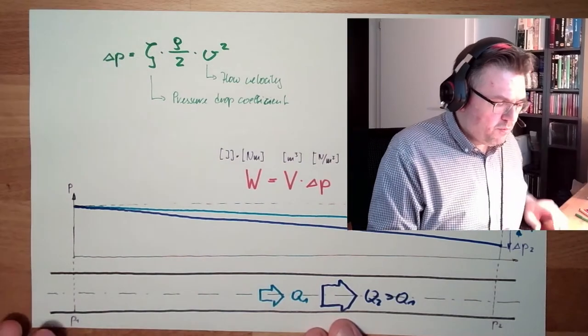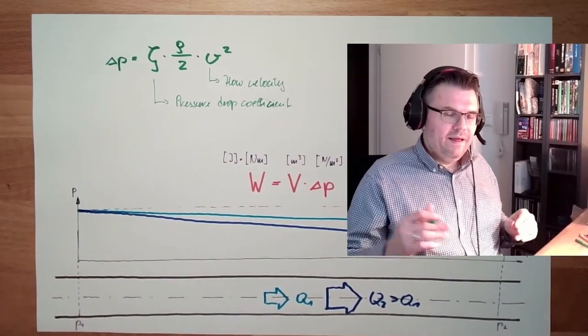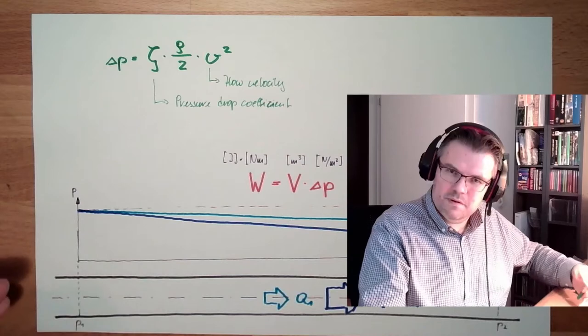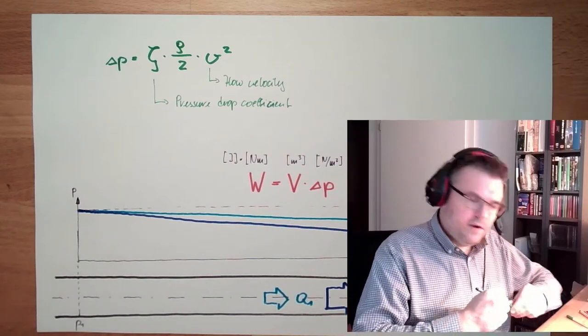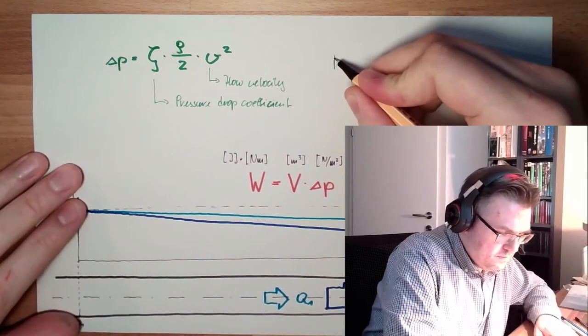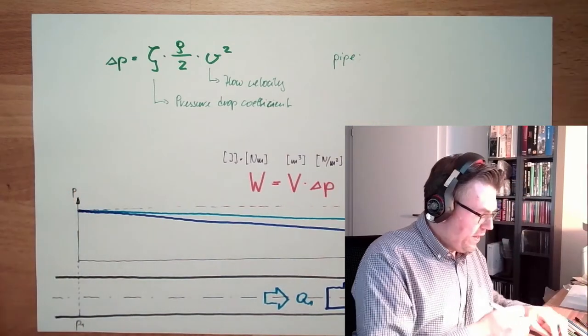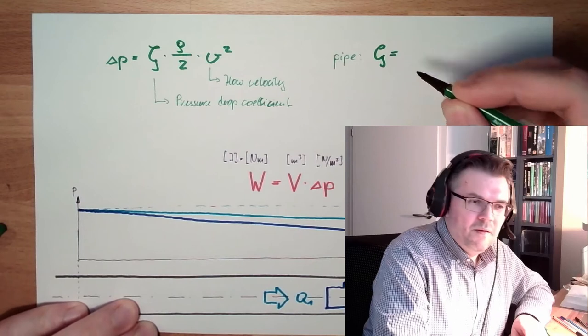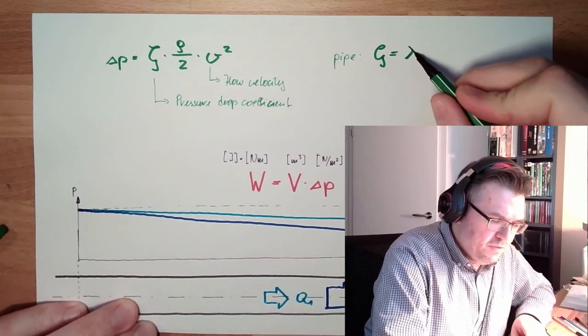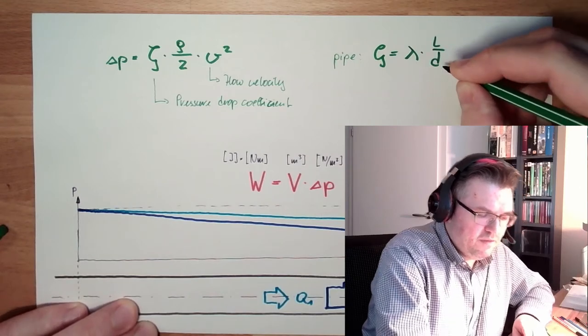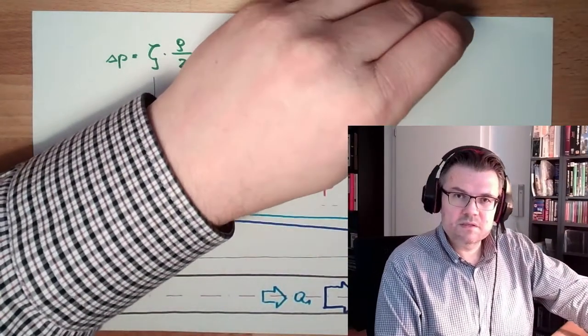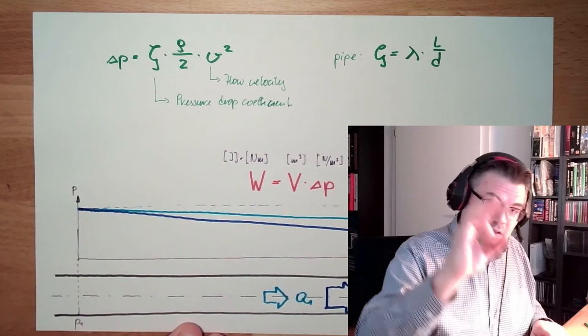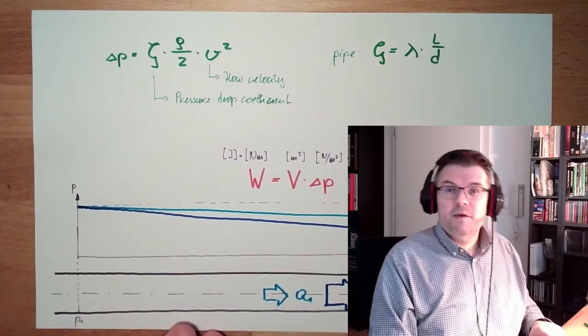From what things is this pressure drop coefficient depending? Well, on a pipe, we can calculate this pressure drop. We can calculate this pressure drop coefficient. Again, there is the so-called pipe friction coefficient, lambda, multiplied by the length of the pipe and the diameter divided by the diameter. This means the longer the pipe is, the more pressure loss I can expect. And the smaller the diameter is, the more pressure loss I can expect. Clear, right? If you think about the water hose in your garden maybe. If you have a short hose, the pressure drop is not that severe. If you have a long hose, then the pressure drop is much severe.